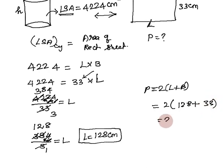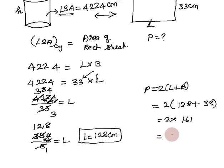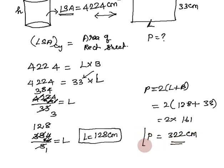Now, perimeter of the rectangular sheet equals 2 times (length + breadth) = 2 times (128 + 33) = 2 times 161 = 322 cm. So 322 cm is the perimeter of the rectangular sheet.